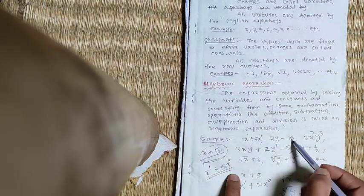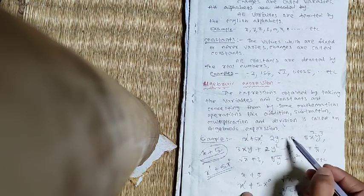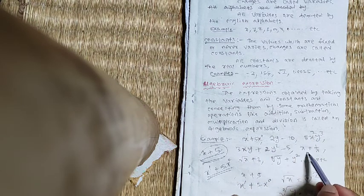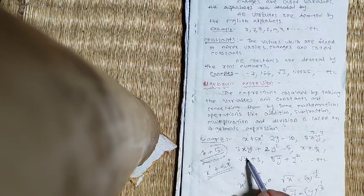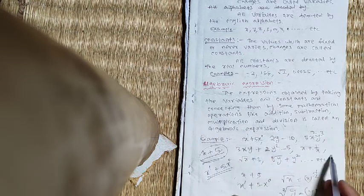Similarly, 2y minus 10. How this expression obtained? When 10 is subtracted from twice the number y, we get this expression. Here 5x square y cube, 3xy plus 2y square minus 5, X plus 1 by X, root over of X plus 3, cube root of Y plus Y square, etc. All these are algebraic expressions.